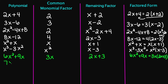Let's try 7x plus 21. My common factor is going to be 7. My remaining factor is going to be x plus 3. So in factored form, we have 7x plus 21 equals 7 times x plus 3.